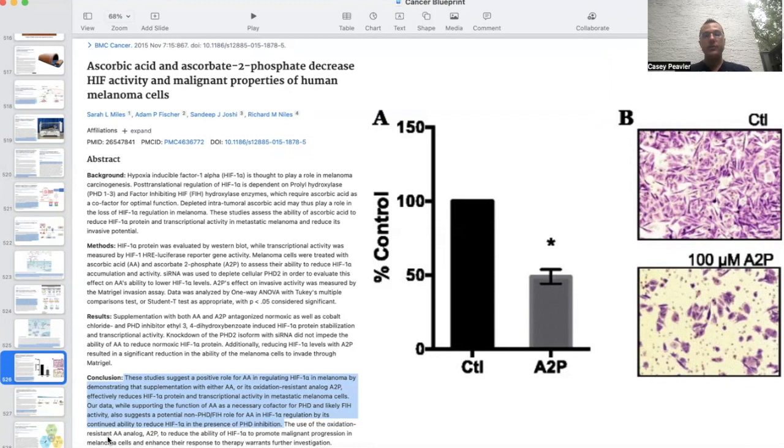The use of the oxidation-resistant ascorbic acid analog A2P to reduce the ability of HIF-1 to promote malignant progression and melanoma cells and enhance their response to therapy warrants further investigation.